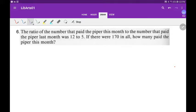The ratio of the number that paid the Piper this month to those that paid the Piper last month was 12 to 5. Okay, so I'm going to say this month T to last month L.